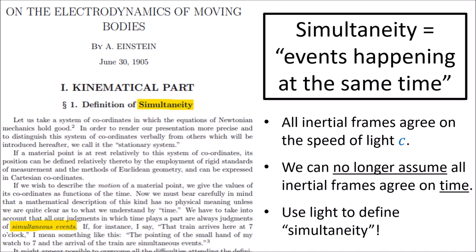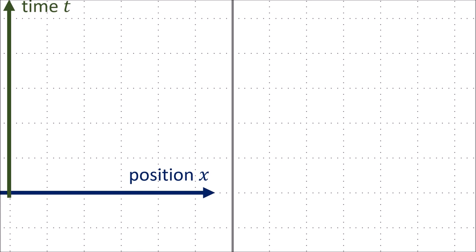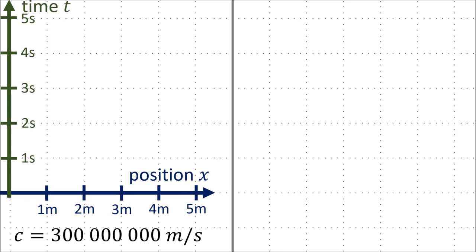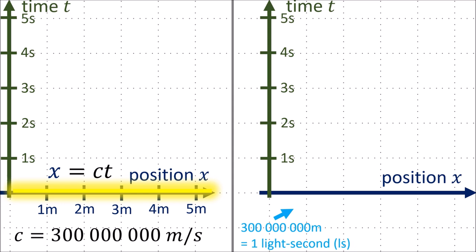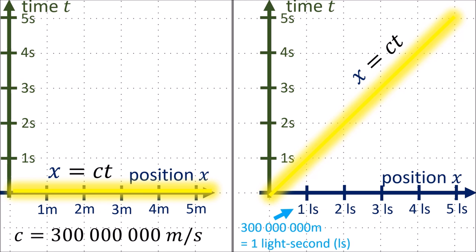Before we start the derivation, I want to point out a small problem with spacetime diagrams. If we use everyday units like seconds for time and meters for position, a beam of light travels so fast at a speed of c equals 300 million meters per second that it looks like a horizontal line, making it really hard to see what's happening. For this reason, it's very common in special relativity to choose units of time and space so that a beam of light travels one unit of distance in one unit of time. For example, if time is in seconds, then one unit of position is the distance light travels in one second, which is 300 million meters, or one light second. This means that a beam of light will always follow a diagonal line at 45 degrees to the horizontal.